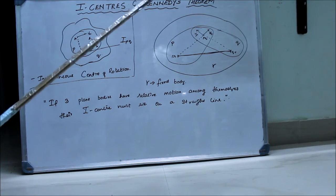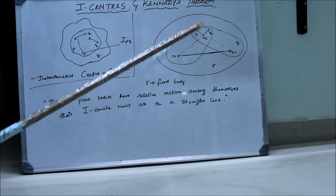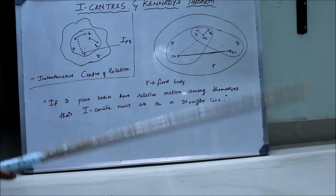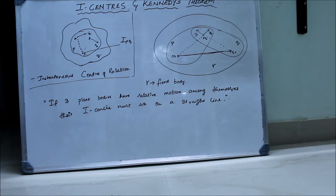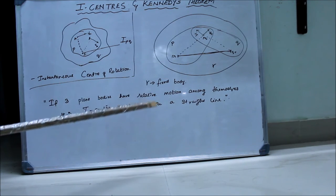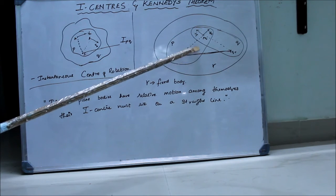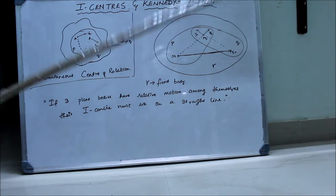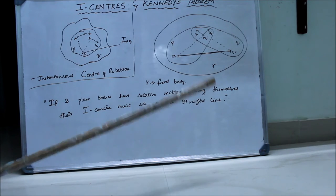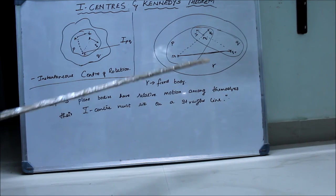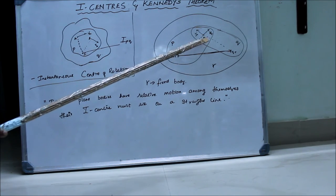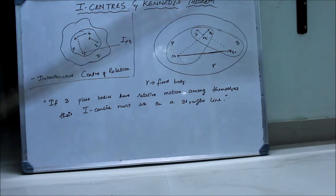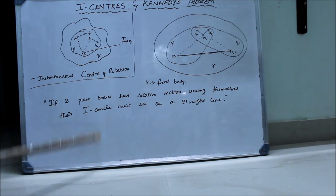From this diagram we see that the direction of the I-center is different when we consider it with bodies P and Q, which is impossible because the direction has to remain the same no matter which body we consider. This is a basic disagreement with Kennedy's theorem. So this I-center has to lie on the line PR–QR. If you consider it anywhere else, the I-center will have different directions when considered with individual bodies. What Kennedy established is that the mutual I-center PQ must lie on a straight line only. If we put PQ here or here or here on that line, the direction will not change — it will be the same no matter what. That is the basic essence of Kennedy's theorem: if three plane bodies have relative motion among themselves, their I-centers must lie on a straight line.